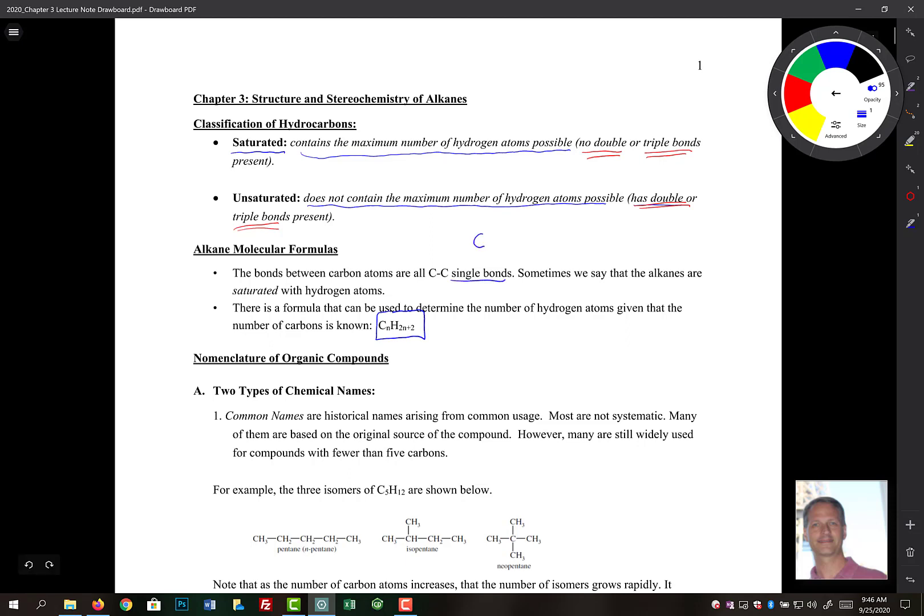So if we have a C2, then we would have an H 2 times 2 plus 2, which is a C2H6. And then the structure of that we can figure out pretty easily. We're going to start recognizing these patterns and we're not going to be counting up valence electrons, for example.